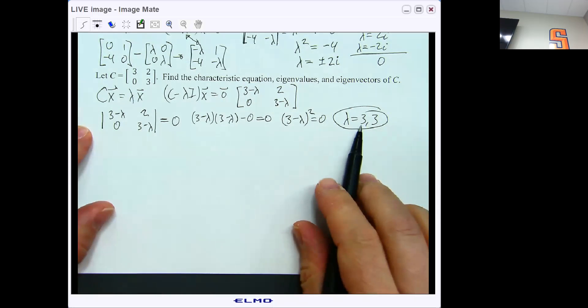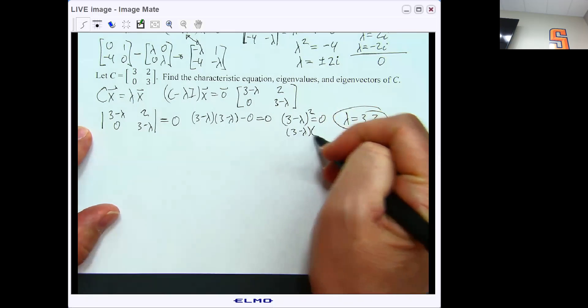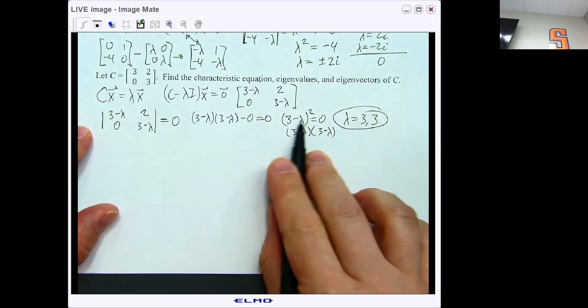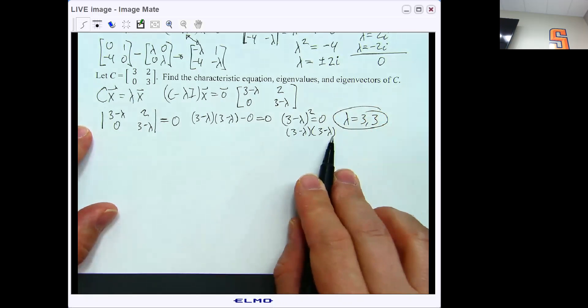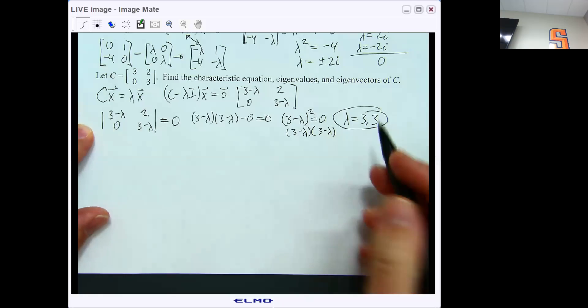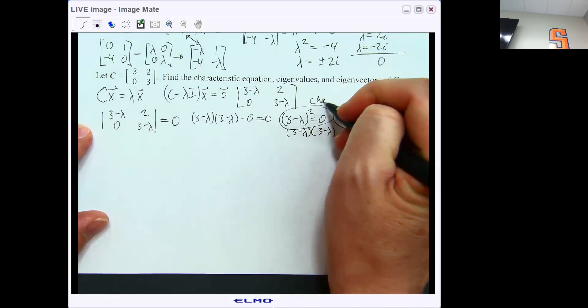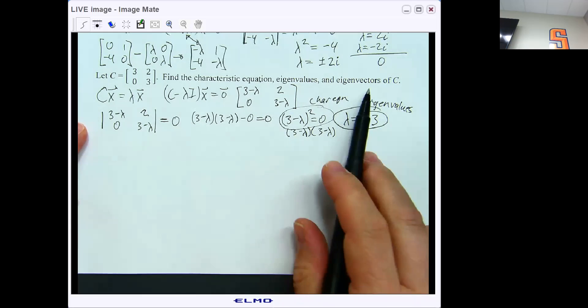And so we can see that lambda will be 3 and 3. So we have two roots or two zeros and they are 3 and 3 because lambda will be a solution to this equation twice when lambda is 3. So we found our characteristic equation and our eigenvalues. We did have a repeat here, that's okay.